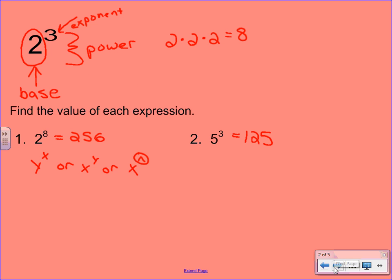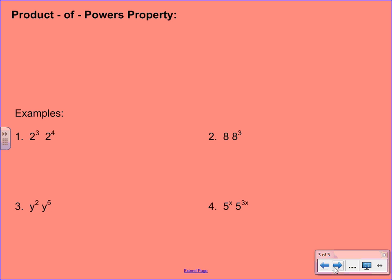Alright, so we're going to move into how do we simplify expressions that have exponents. Our first property is called the product of powers property. And it looks like this: x to the m times x to the n equals x to the m plus n. What I want you to write down here is when you multiply powers that have the same base, you should add the exponents. You'll note that the x's, the bases, those are the same.